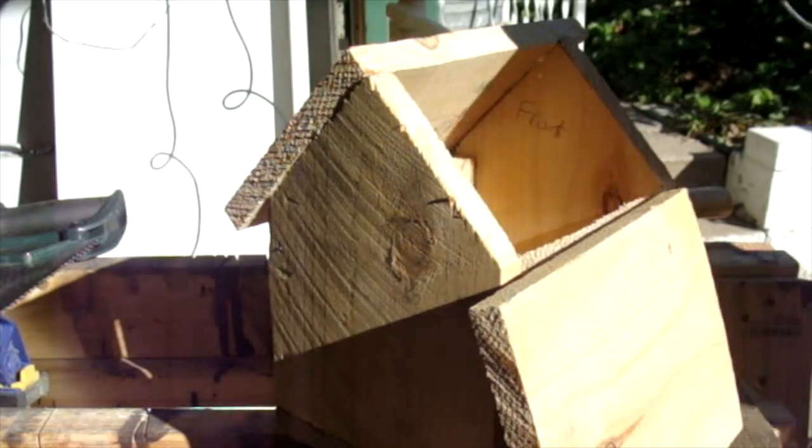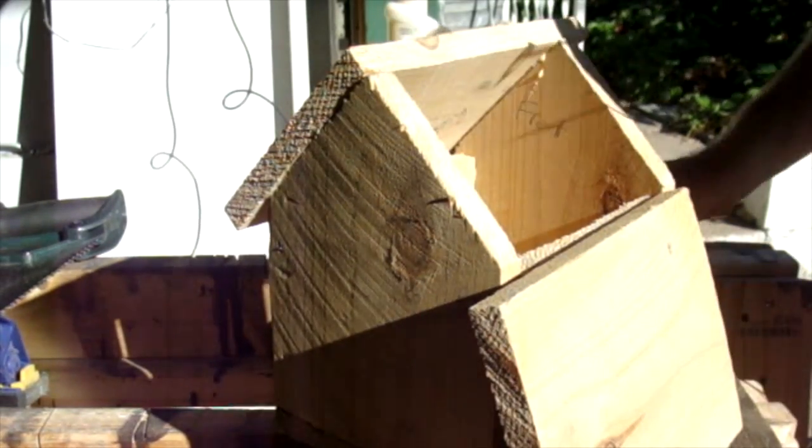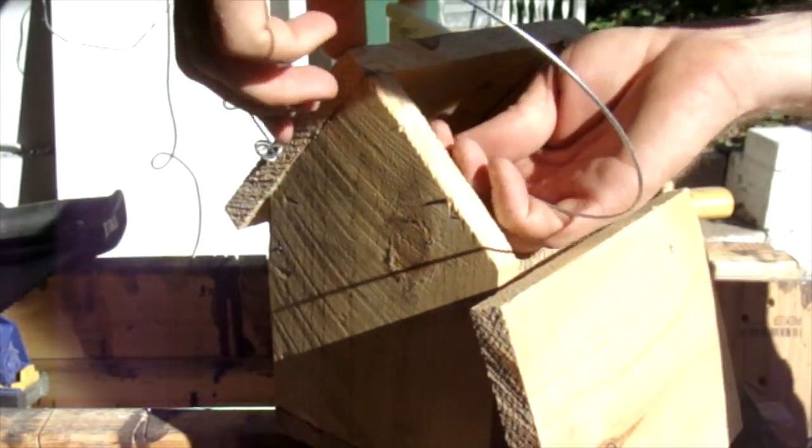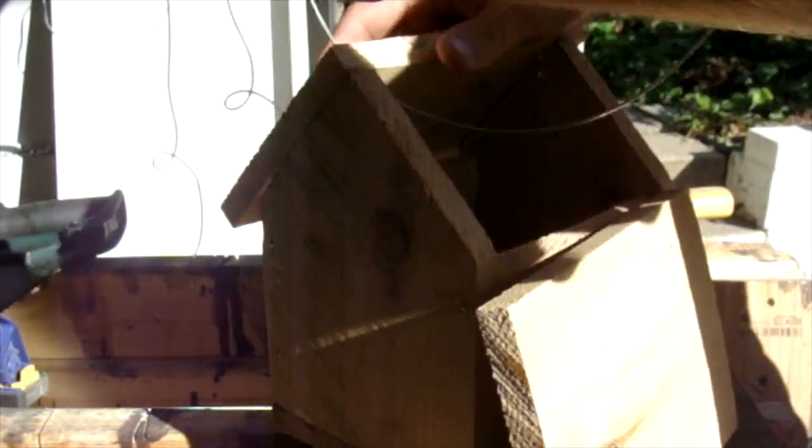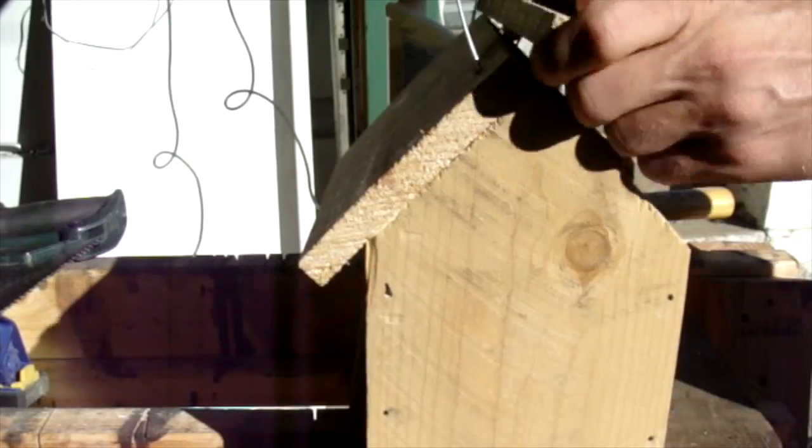Before I attach the last piece of roofing, you could attach this birdhouse to a post, or you can hang it up. So what I'm going to do is drill two holes in the roof pieces and run wire through them so that I can hang the birdhouse.